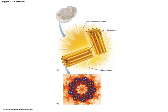Centrioles are small, barrel-like organelles that are associated with a centrosome. This forms the basis of cilia and flagella. The centrosome is a region near the nucleus that helps to organize the microtubules and organize a spindle fiber during mitosis, which we'll be talking about in the next unit in this particular chapter.